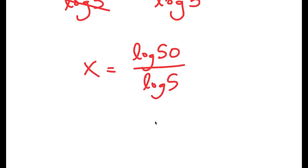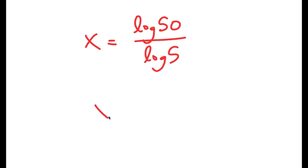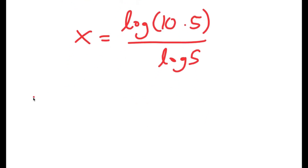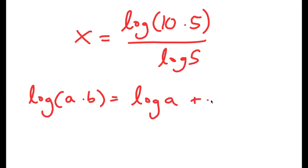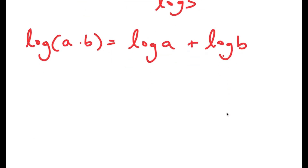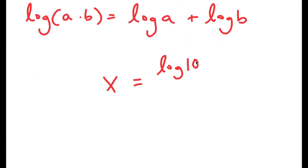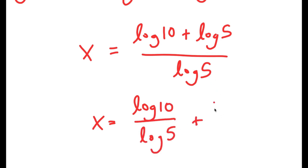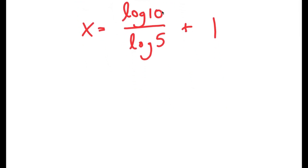Let's simplify to get the exact decimal value. Log 50 is the same as log(10 × 5). Another property of logarithms states that log(a × b) equals log a plus log b. So this becomes (log 10 + log 5) over log 5, which equals log 10 over log 5 plus 1. And log 10 equals 1, so x equals 1 over log 5 plus 1.